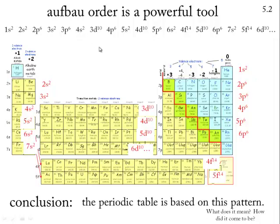So our conclusion is the periodic table is based on this pattern. How important is it? What can we do with it? Well, clearly it's a basis. You see these periodic tables everywhere. It must be important. Where did it come from? How did it come to be? What does it mean? All will be revealed in the next screencast. This is Screencast 5.2.